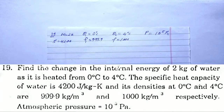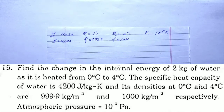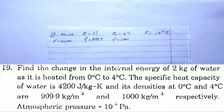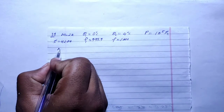HC Verma solution, Chapter 26 Laws of Thermodynamics, Question 19. Find the change in internal energy of 2 kg of water as it is heated from 0°C to 4°C. The specific heat capacity of water is 4200 J/kg·K, and its density at 0°C and 4°C are 999.9 and 1000 kg/m³ respectively. Atmospheric pressure is 10⁵ Pascal.